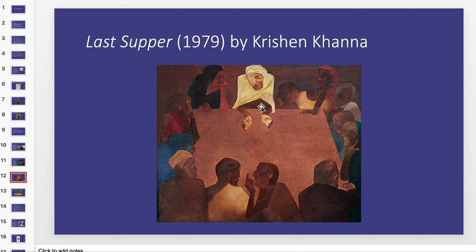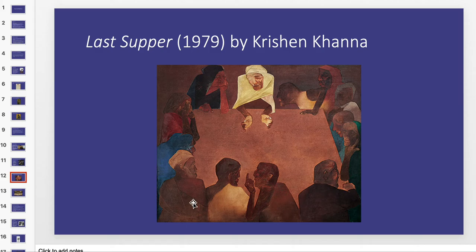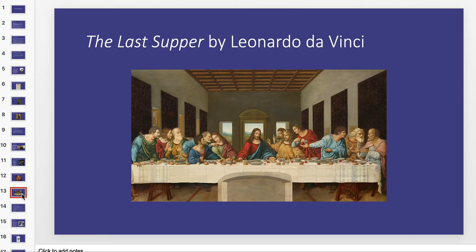Some people like the square table because everyone has to face each other, as opposed to the awkwardness of the long rectangular table. The long table lets the viewer see everyone straight on, while in Khanna's version some figures have their backs to the audience — but at the same time it can make the scene seem more realistic. Think about those similarities and differences as you go through the PowerPoint later on.